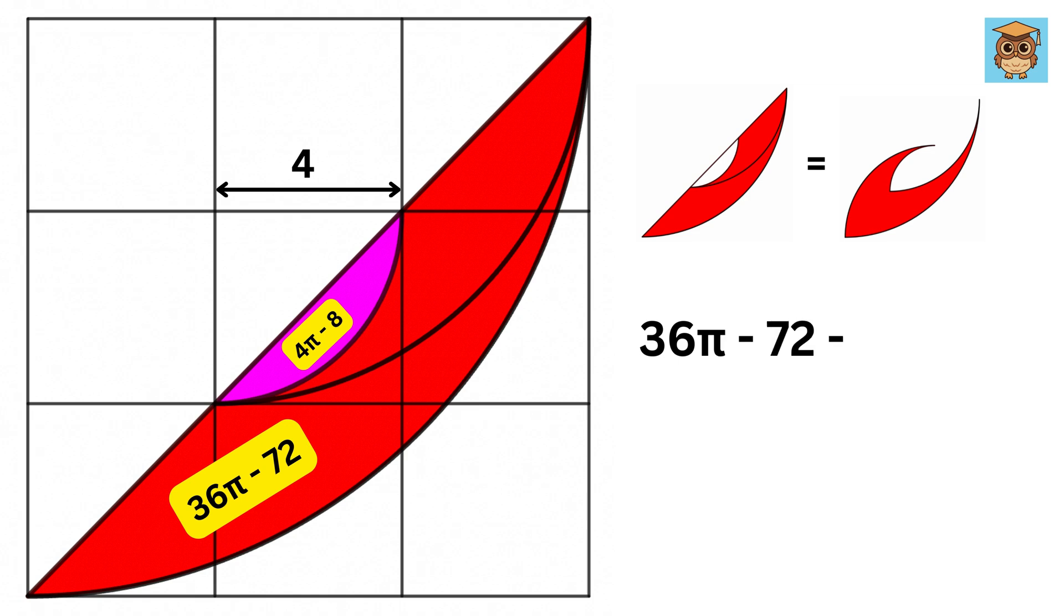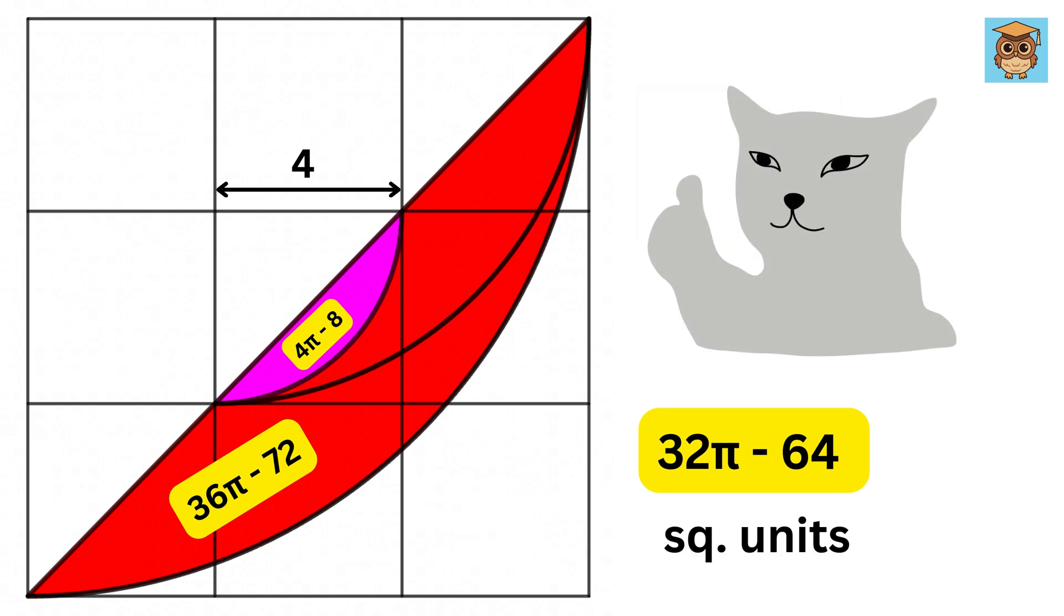So the red region's area will be 36 pi minus 72 minus 4 pi minus 8 or 32 pi minus 64. Don't forget to put the units square.